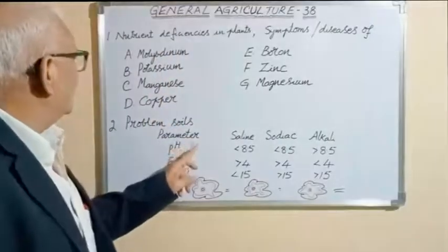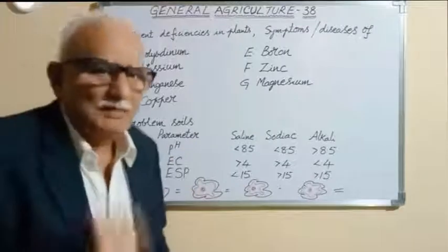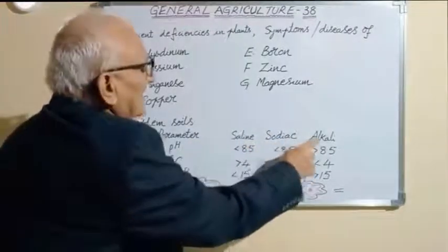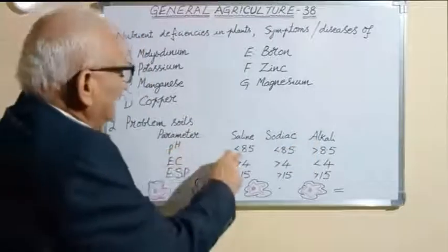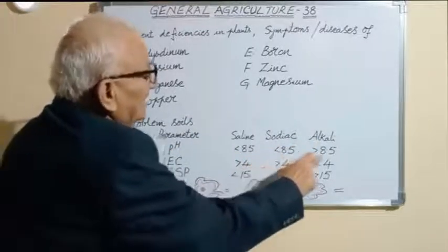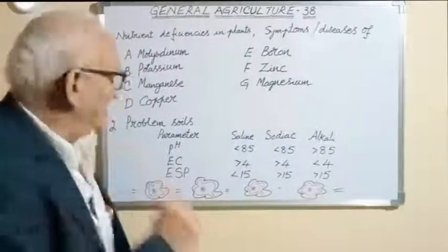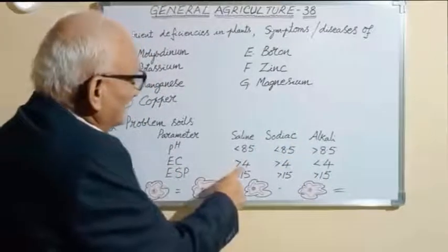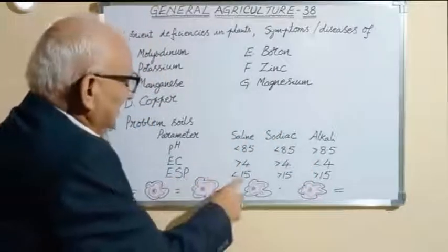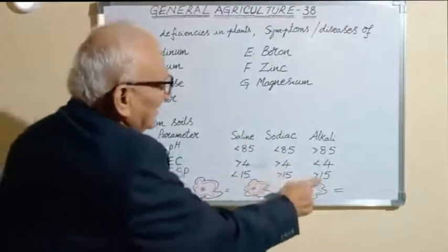What are the problem soils? Parameters: saline, sodic, alkali soils. pH less than 8.5, less than 8.5, more than 8.5. EC more than 4, less than 4. Finally, ESP less than 15, greater than 15, greater than 15.